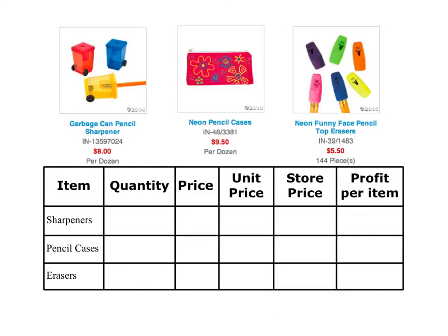Here we've got three different items — this is kind of like what you're going to be doing on your next project and on your homework during class tomorrow. We've got pencil sharpeners, pencil cases, and funny face pencil top erasers. The quantity is going to be the number, so a dozen means 12.